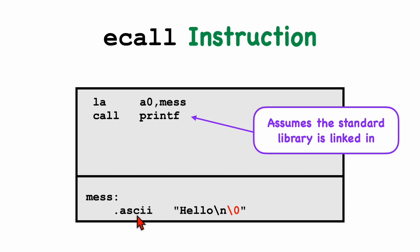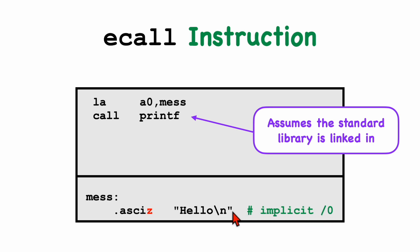There's also another assembler directive called ASCIIZ, which implicitly includes the null character in the string.